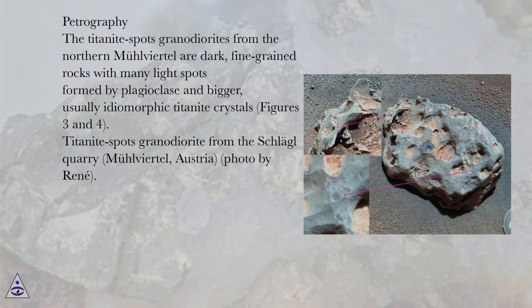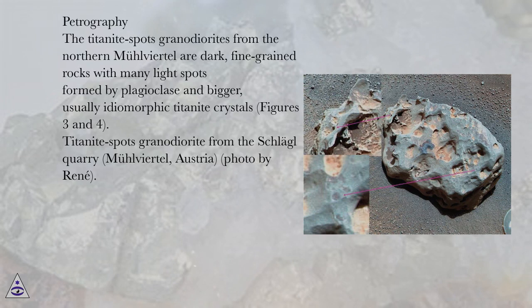Petrography. The titanite-spots granodiorites from the northern Moldanubian area are dark, fine-grained rocks with many light spots formed by plagioclase and bigger, usually idiomorphic titanite crystals.